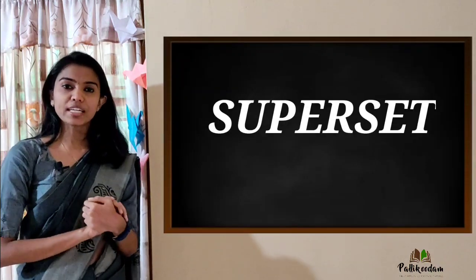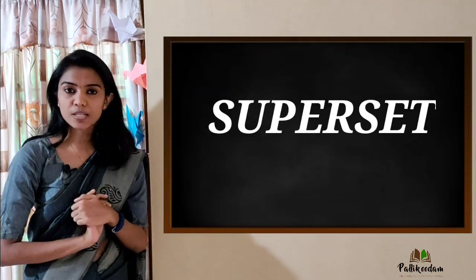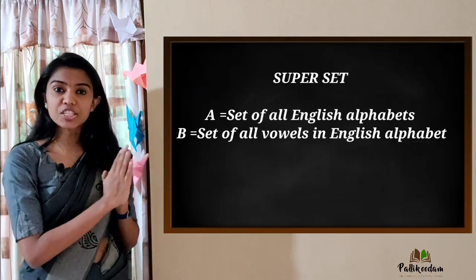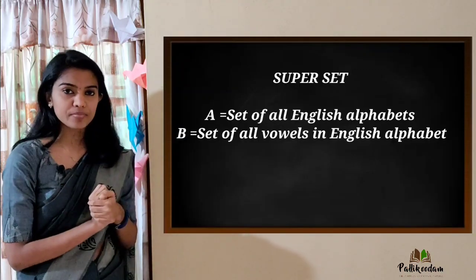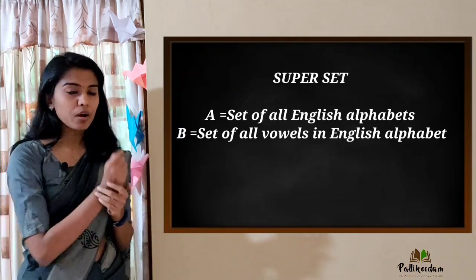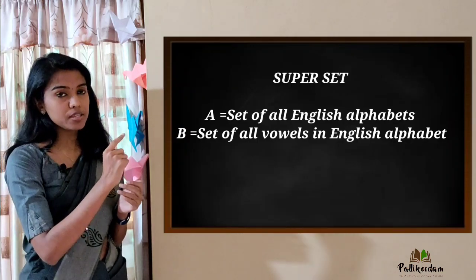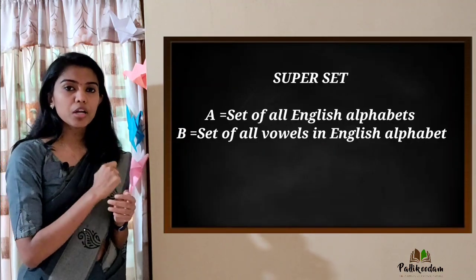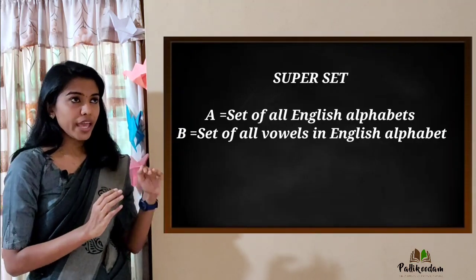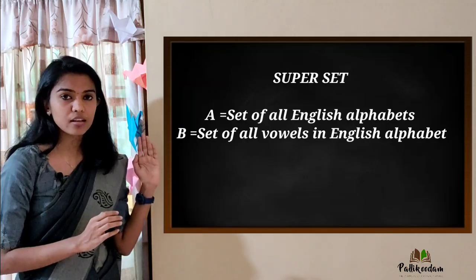Now we have to use the term Superset. A = set of all English alphabets, that is A = {a, b, c, ... z}. B = set of all vowels in English alphabet, that is B = {a, e, i, o, u}. Then A is called the superset of B.